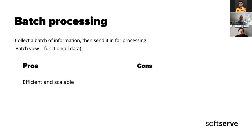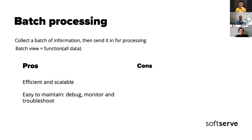Batch processing has its pros and cons. First, it's efficient and scalable — we have very good tools created years ago to process batches efficiently, and it's horizontally scalable. It's usually fairly easy to maintain because the process is functional: we have input, we know the expected output, and we can troubleshoot, monitor, and debug it. If a new version causes errors, we can quickly revert and reprocess all the data.